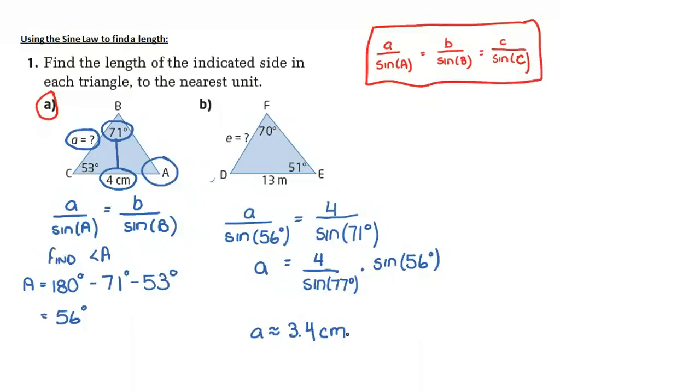the middle side is across from the middle angle, and the largest side is across from the largest angle. We know that 71 degrees is the largest angle, so 4 has to be the largest side, and therefore, since a is less than 4, I feel that this is a reasonable answer. I hope that helped.